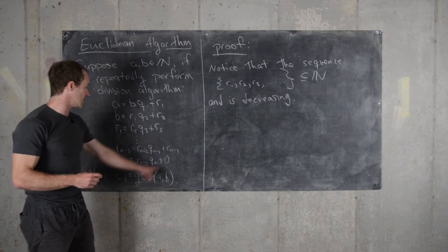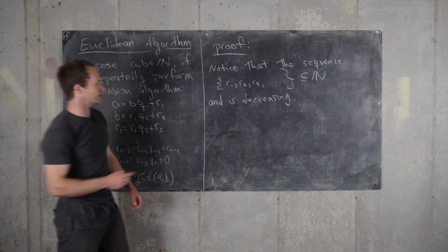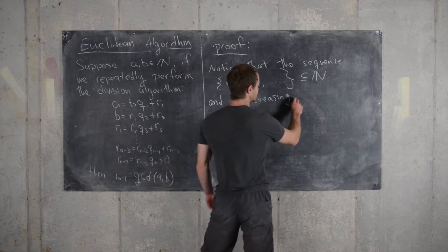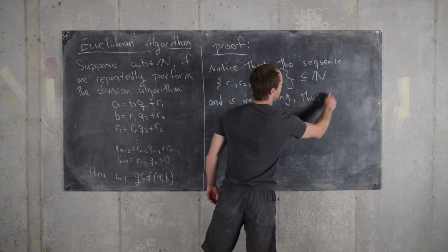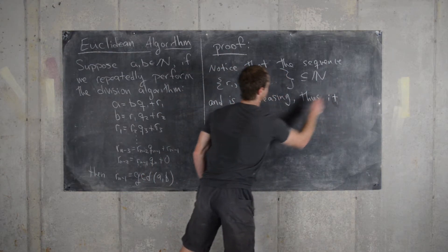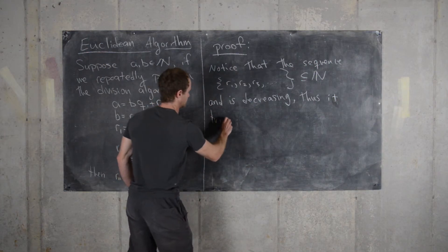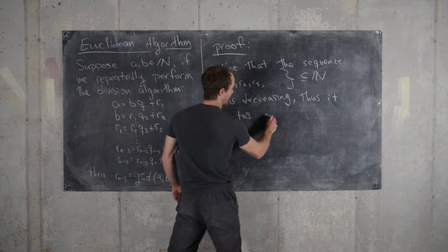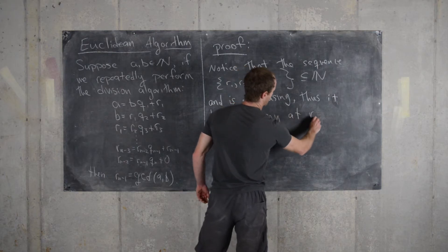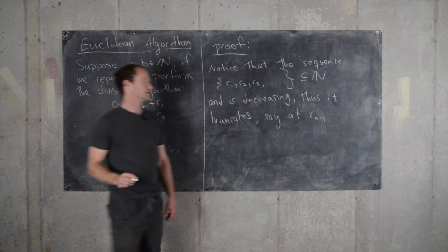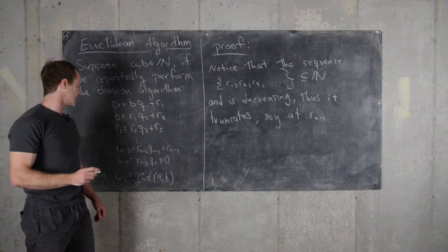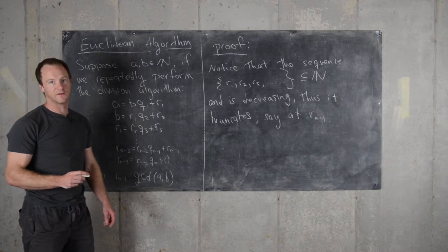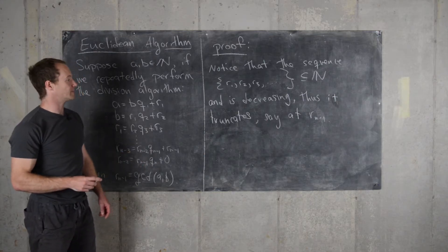So it will truncate at its smallest positive value, and so that value will be R sub N minus 1. So it's decreasing, so thus it truncates at R N minus 1. In other words, that's the last non-zero element of this sequence.